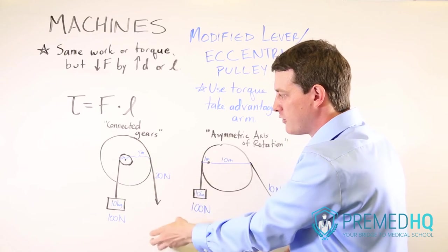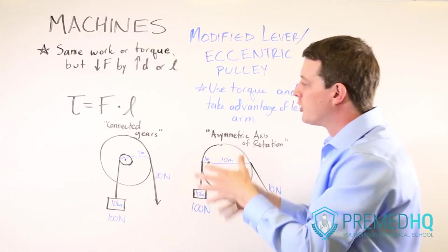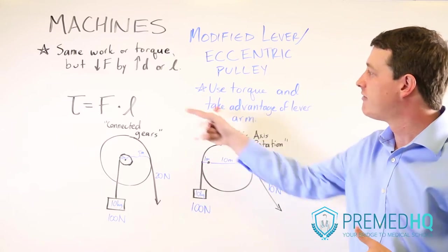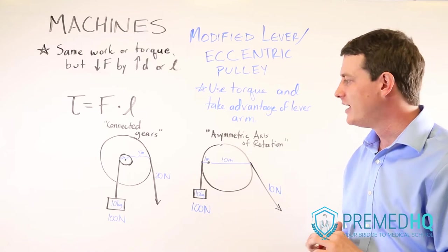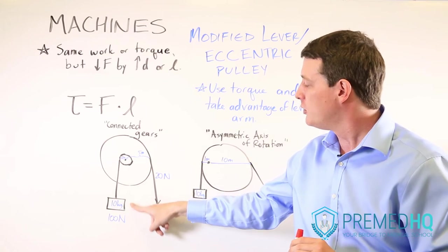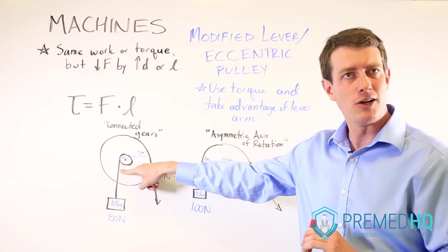So when you pull on this over here on the right, you're going to be pulling down on something with a five meter lever arm. And so it's going to reduce the amount of force necessary to lift this hundred newton object with a one meter lever arm.